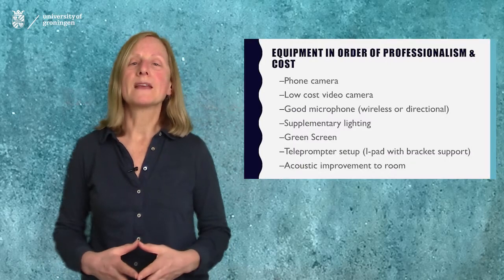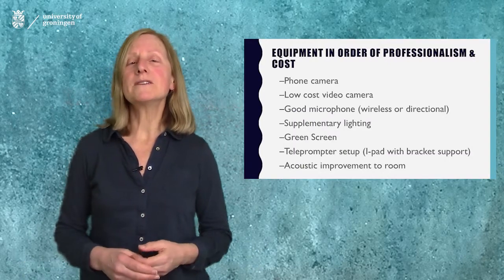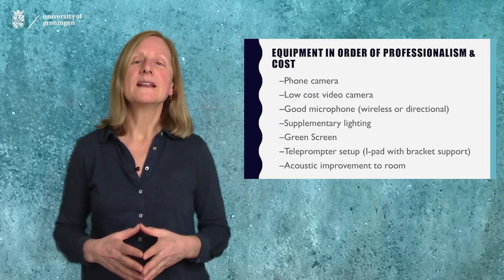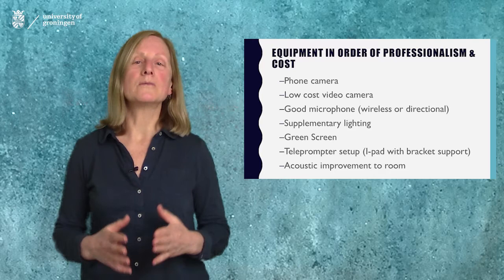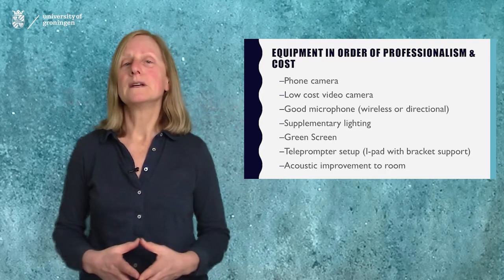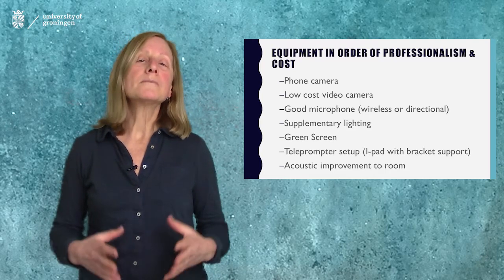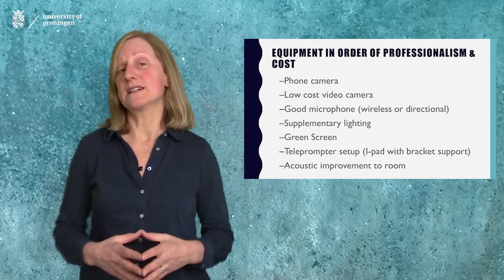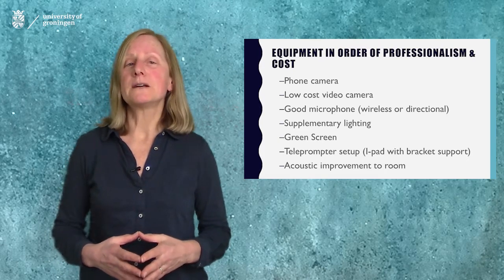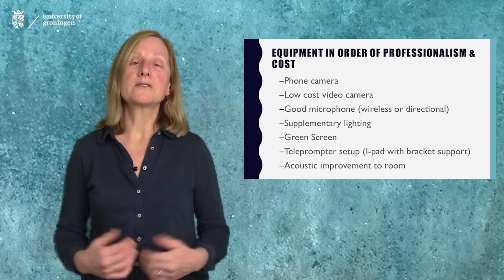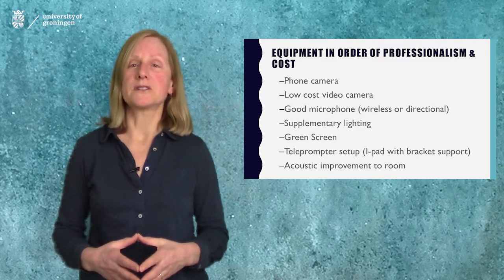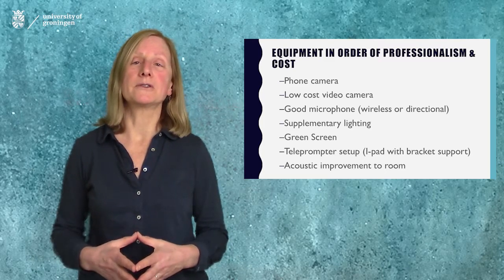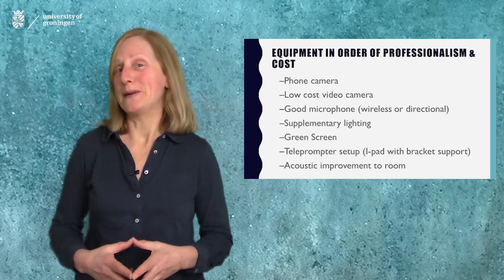To do these things, you can start small and build up. Everyone has a phone to make short videos. But if you want to go up in flexibility, then you can get a low cost video camera. You'll get more professional quality with a good microphone and supplementary lighting. My more professional field trip videos have this. And for integrating backgrounds into lectures, you'll need a green screen when you film. It's inexpensive. It also helps to have a teleprompter set up and acoustic improvements to the room, but those are more expensive and you have to really be committed for that.